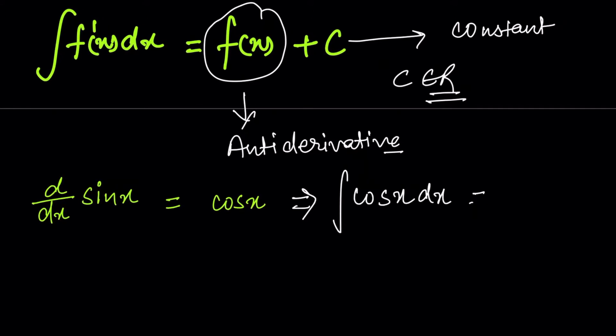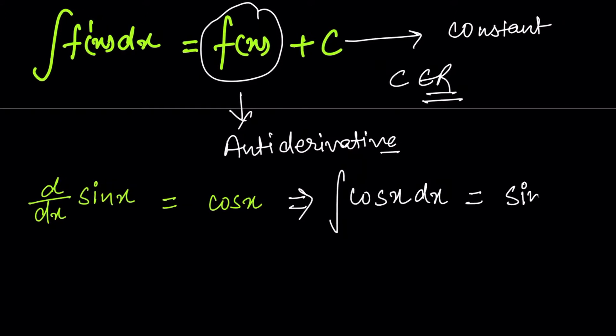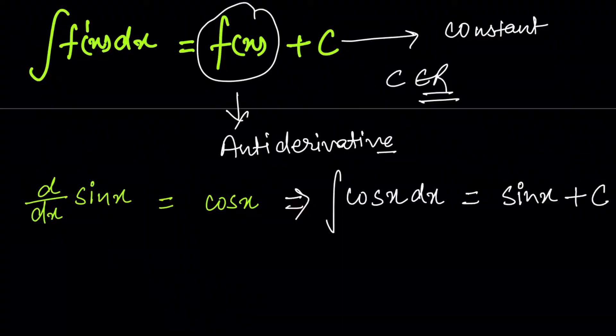The result is written as plus C, where C is a constant. The value of C can be any real number. Here we are performing anti-differentiation. If the derivative of sin(x) is cos(x), then the anti-derivative of cos(x) is sin(x) + C.